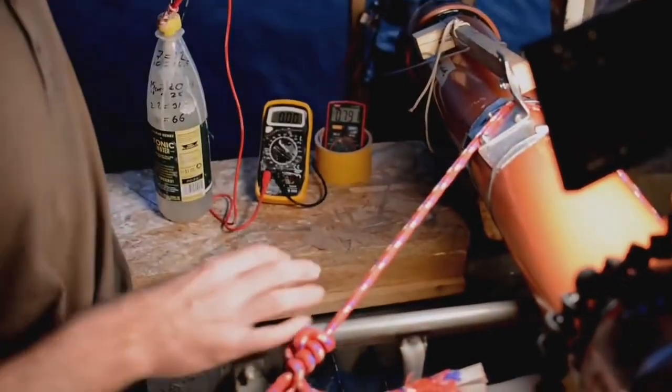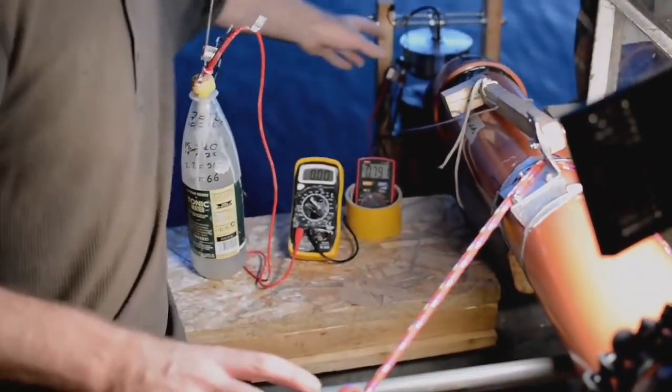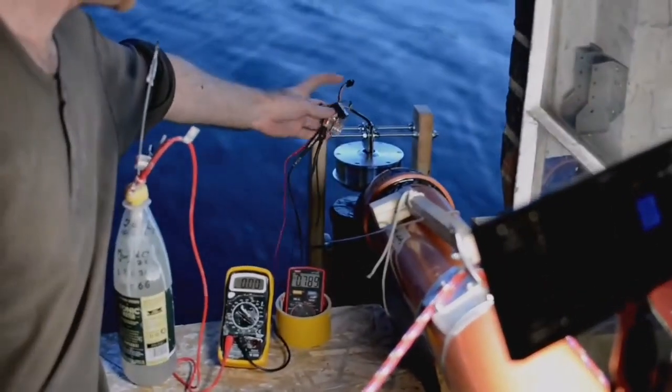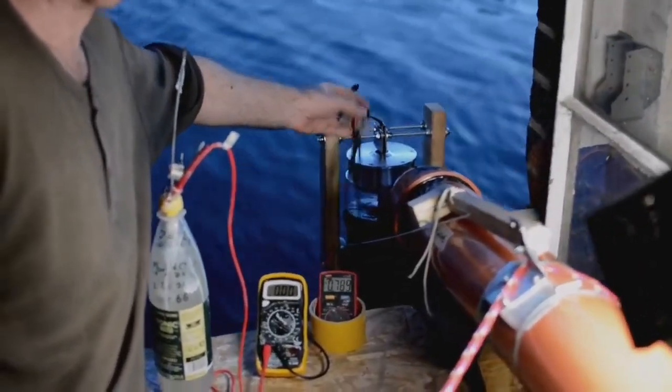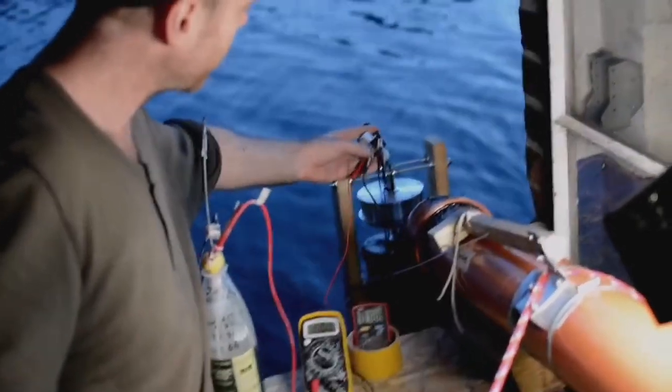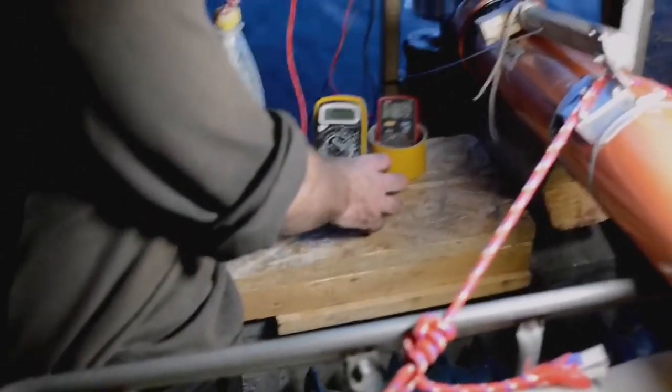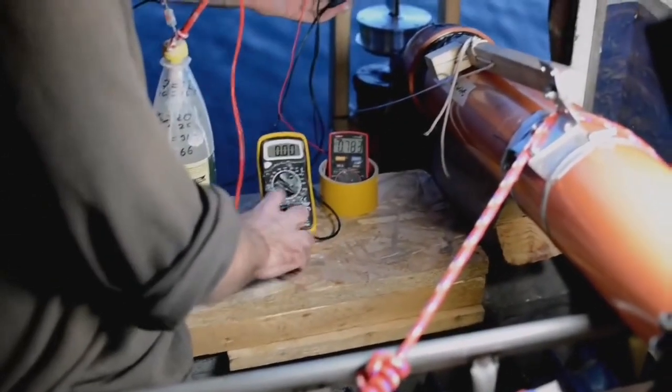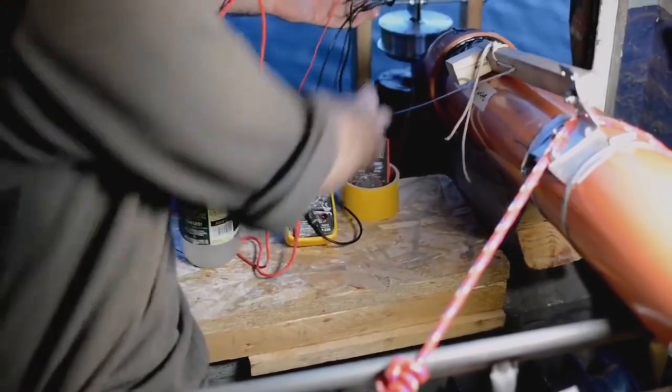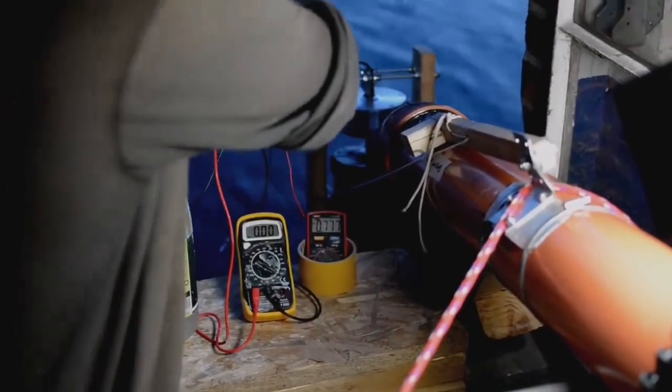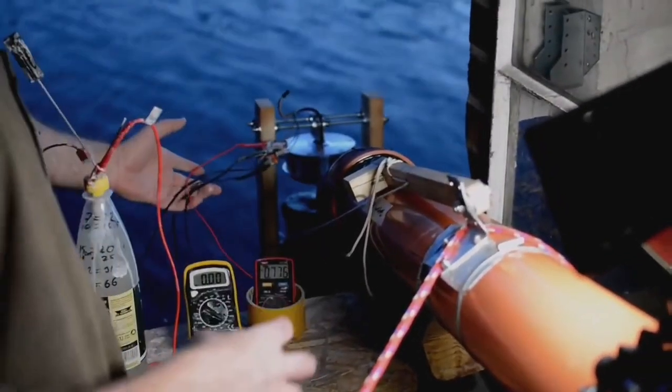So just a quick walkthrough of how I've been testing this. It's very basic. I've got the three phases from the alternator coming through a three phase bridge rectifier to convert it to DC. And then I've got a voltage meter just across the DC output in parallel. I've got an amp meter in series.